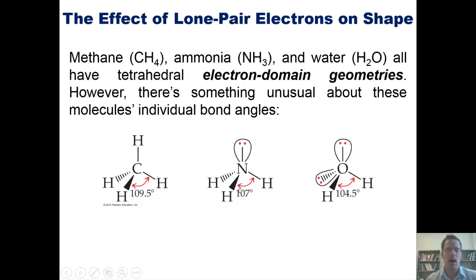In ammonia, however, I have a slightly smaller bond angle between the hydrogens, 107. That means that there's a larger bond angle between the lone pairs up top and each of these hydrogens.